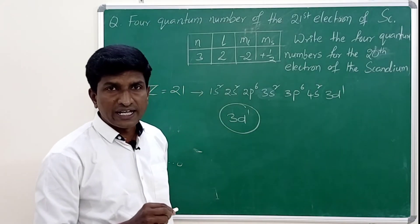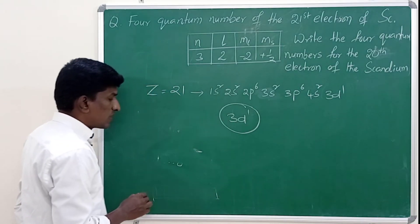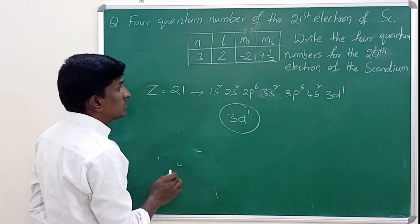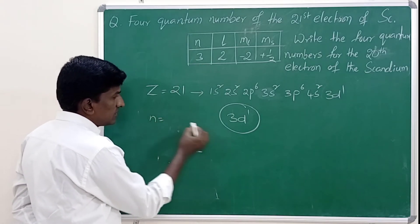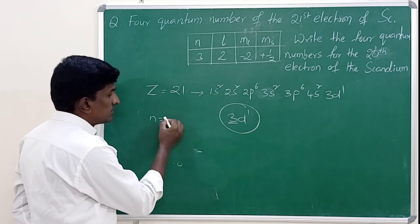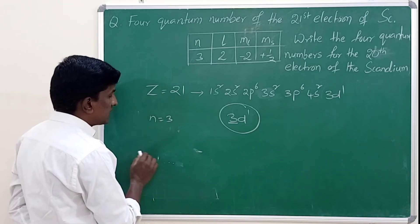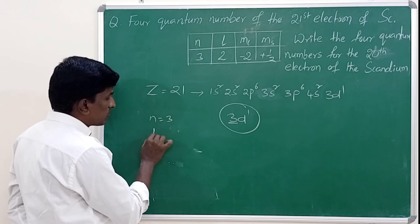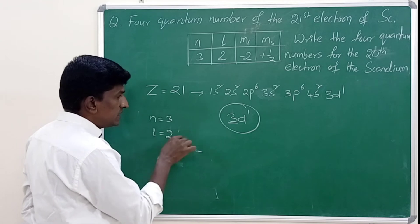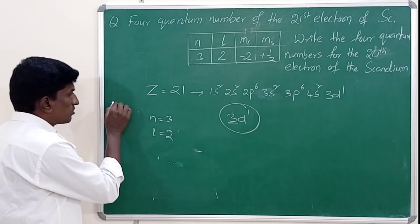The 21st electron of scandium is filled in the 3d orbital. So the 3d orbital holds the 21st electron in scandium, and its four quantum numbers are already given. The first principal quantum number is 3 — that is the main shell — and the angular momentum quantum number is 2 for the d orbital.